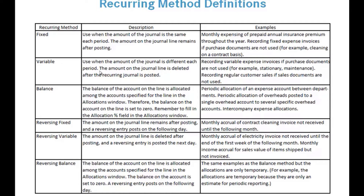Variable is used when the amount of the journal is different each period. After you post it, the amount is reduced to zero so it clears out, preventing you from accidentally using the wrong amount again. This is for recording variable expense invoices — for example, stationery, maintenance, or regular customer sales when a customer document is not used.